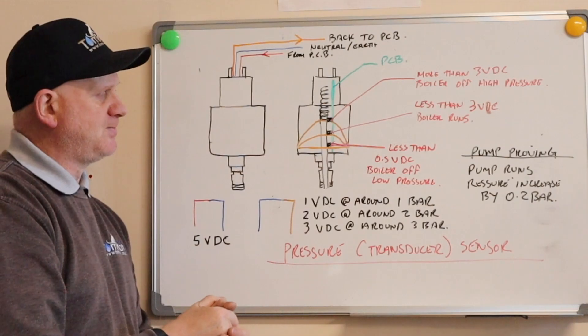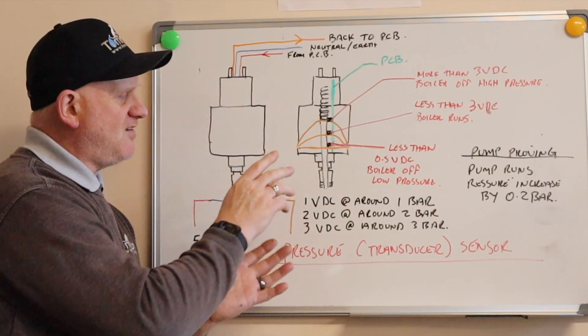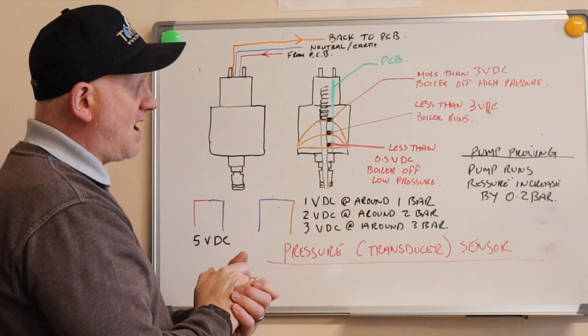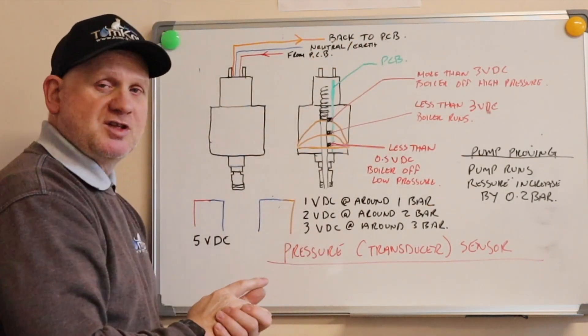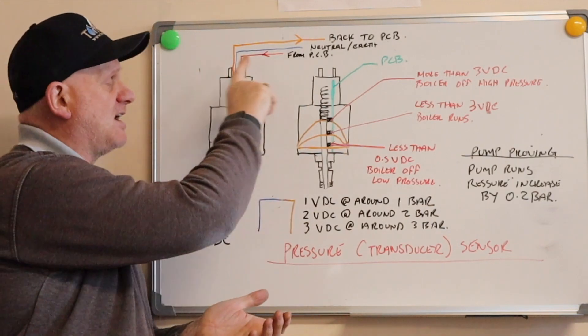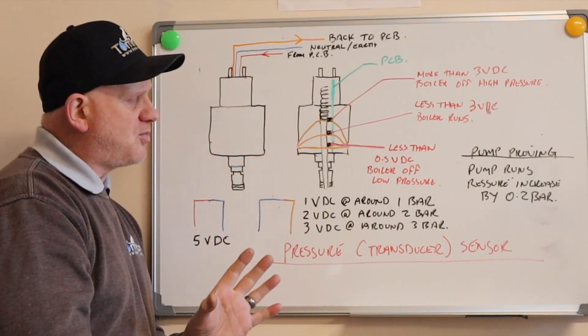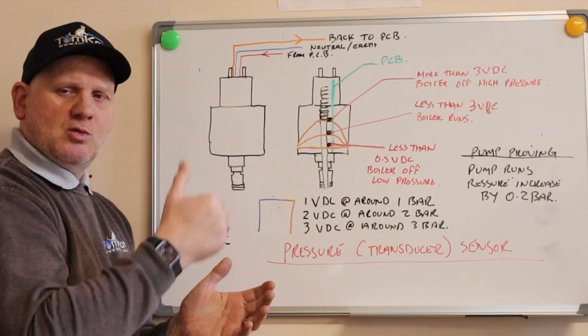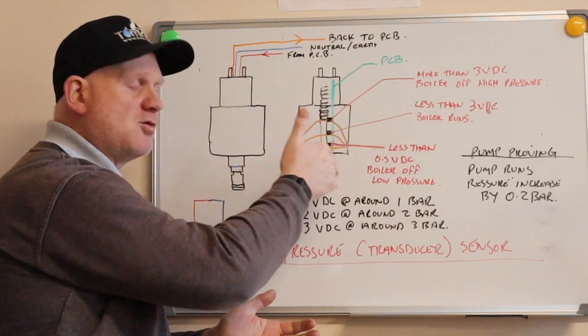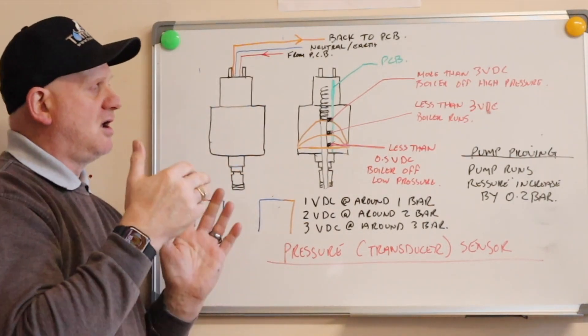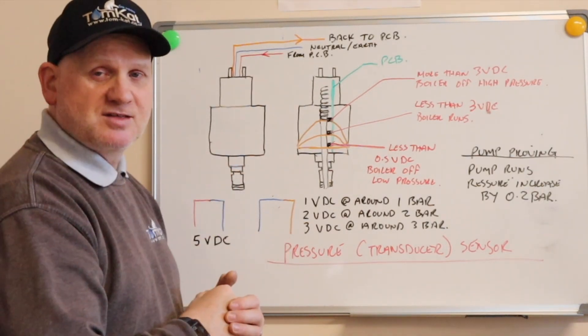But if the pressure goes over 3 bar, then the boiler will turn off because it will be getting 3 volts DC back down the orange and it'll know there's a problem. And also your pressure relief valve will activate, and then this will put it down into a fault and stop the boiler working and won't work again until you press the reset button once you've put the water in there.